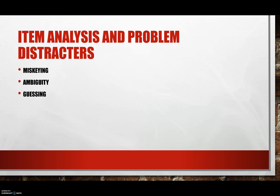Item analysis also helps us identify problem distractors. Miskeying: when an item is miskeyed, most students who did well on the test will likely select a distractor rather than the keyed option—anytime most students in the upper half fail to select the keyed option, consider whether your item is miskeyed. Ambiguity: this occurs when the upper group selects a distractor with the same frequency as the correct answer—quantitative analysis only suggests ambiguity and does not tell us the root of the problem, so we must turn to qualitative analysis. Guessing: when guessing occurs, students in the upper half respond randomly and each option is chosen about equally—this happens when the item covers content not taught in class, when the item is so difficult even upper students couldn't grasp the concept, or when the item is so trivial that students are unable to recall it.